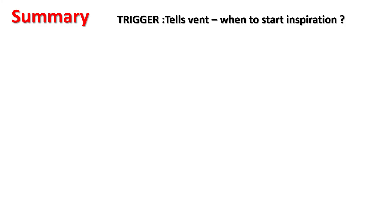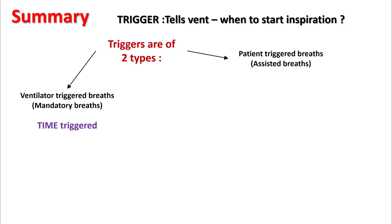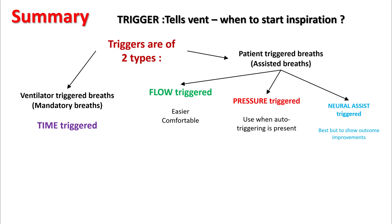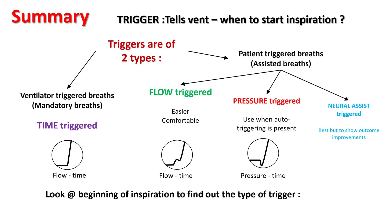In summary, the trigger tells the vent when to start inspiration. There are two types of triggers: ventilator-triggered breaths, which are mandatory and time triggered, and patient-triggered breaths, which are also called assisted breaths and can be flow triggered, pressure triggered, or neural assist triggered. Flow trigger is most comfortable — use flow triggering in COPD patients. If the patient has issues with auto-triggering, use pressure trigger. If you have capabilities for neural assist triggering, you can certainly use that as well. To figure out what type of triggering you are dealing with, look at the beginning of inspiration: an upward notch in the flow time scalar or a downward notch in the pressure time scalar indicates patient triggered; if you don't see any, it is likely ventilator triggered.